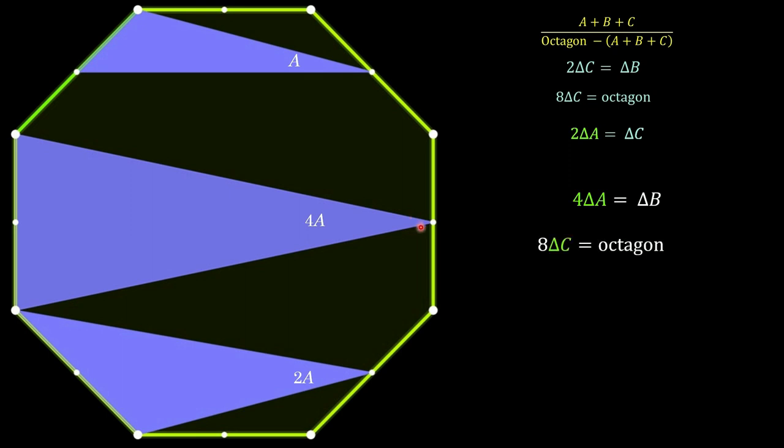All right. So now our octagon, it's 8 times C. All right. We found that earlier. 8 times C is the octagon, but C is 2 times A. So we're going to plug in 2 times A right here. So 8 times 2 is 16. So 16A is the entire octagon. All right. So here's what we've got then. We know that A is the area of A and then B is 4A, C is 2A, and the entire octagon is 16A.